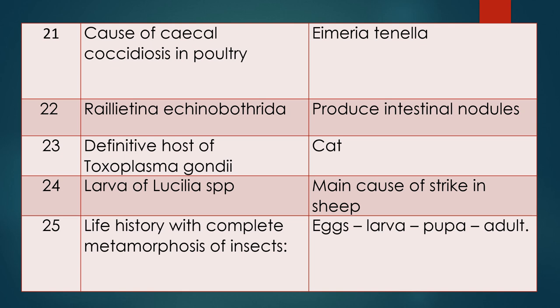Question twenty-five: Life history with complete metamorphosis of insects — what sequence does metamorphosis pass through? Answer: First egg, then larva, then pupa, and then the adult.